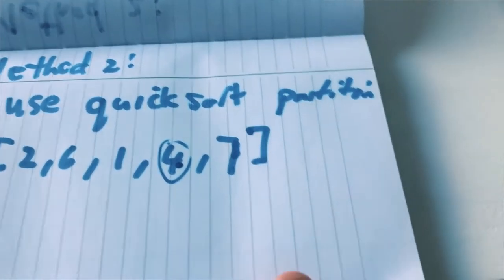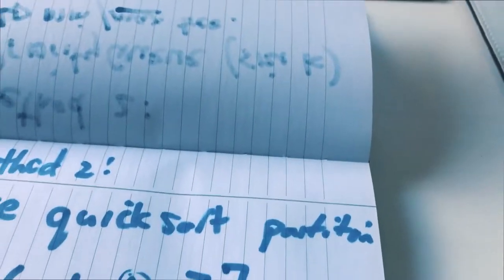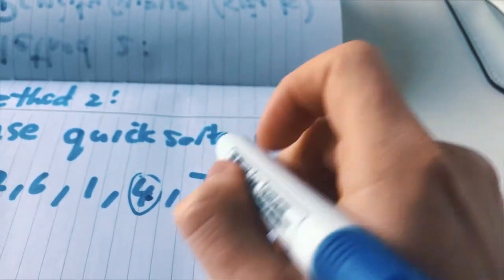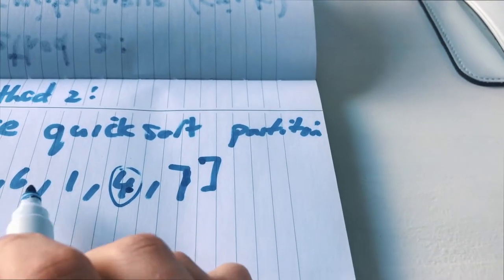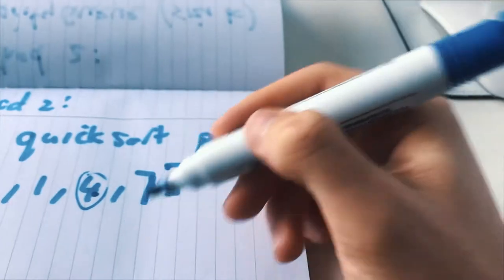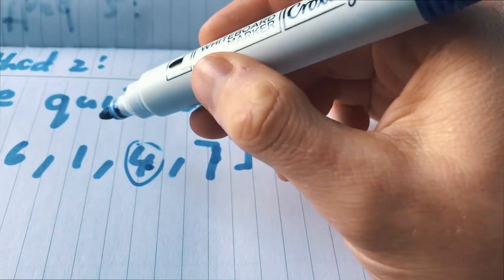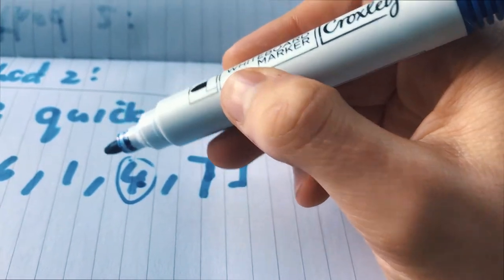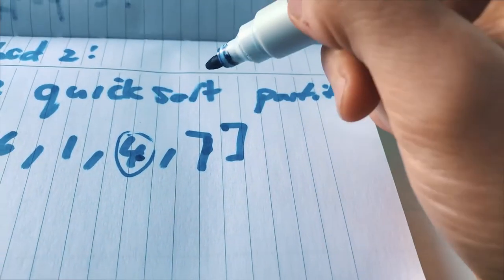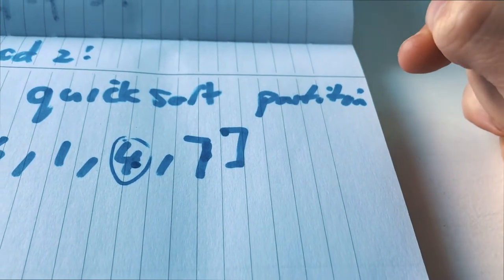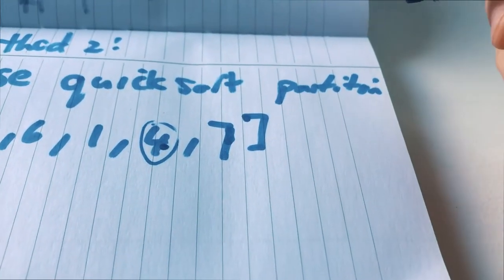Using quick sort partition is a little bit trickier to explain, but basically every time you partition your array, the partition function returns the index of an element in its correct position. If that element is k, then we just return that element.